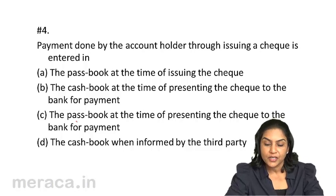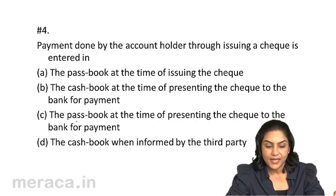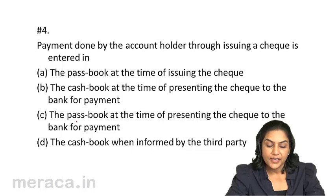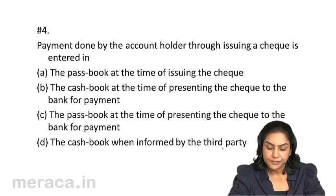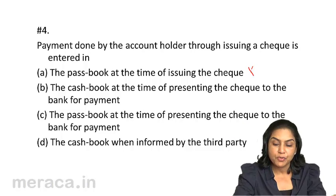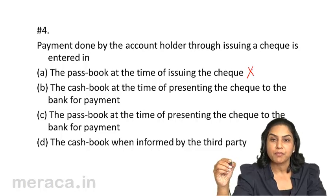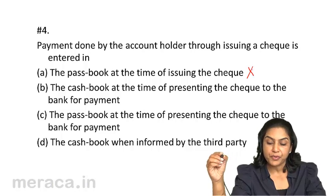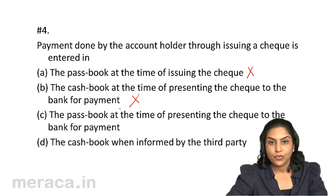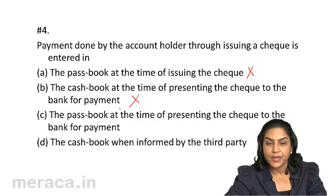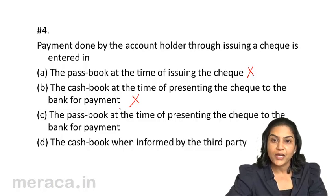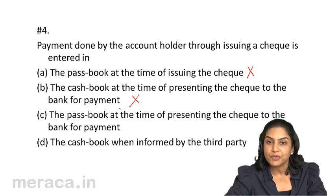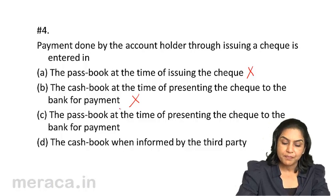Question 4: Payment done by the account holder through issuing a check — is it entered in the pass book at the time of issuing the check? No, the bank is not aware when the check is issued, so it cannot pass an entry. Is it entered in the cash book at the time of presenting the check to the bank? No — when we issue the check, we record it in our books immediately. Option C — entered in the pass book at the time of presenting the check to the bank for payment — that appears to be right.